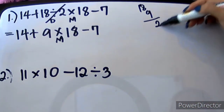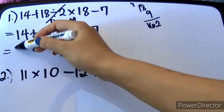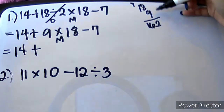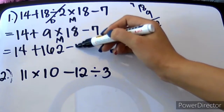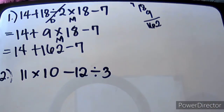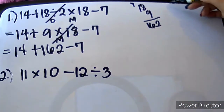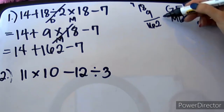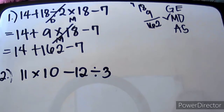Commutative naman po ang multiplication, so let's compute. That will give us 162. So, yung 14 still 14, plus 162 minus 7. We're done with M. So, wala tayong G, wala tayong E, nasa MD tayo, tapos na yun. Ngayon, we are now on addition or subtraction. And again, as they appear from left to right, from left to right, meron tayong addition bago natin magkakaroon ng operation na subtraction.